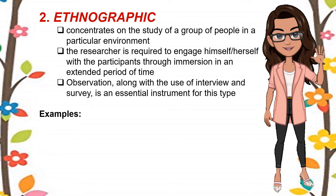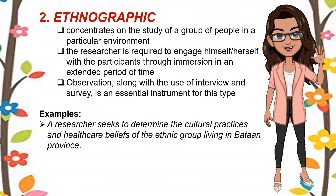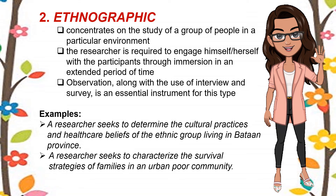The second type is ethnographic. It is a kind of qualitative research which concentrates on the study of a group of people in a particular environment. To characterize behaviors, cultures, challenges, and possible occurring themes, the researcher is required to engage himself or herself with the participants through immersion in an extended period of time. Observation along with the use of interview and survey is an essential instrument for this type of study. Examples: a researcher seeks to determine the cultural practices and healthcare beliefs of the ethnic group living in Bataan Province, and a researcher seeks to characterize the survival strategies of families in an urban poor community.